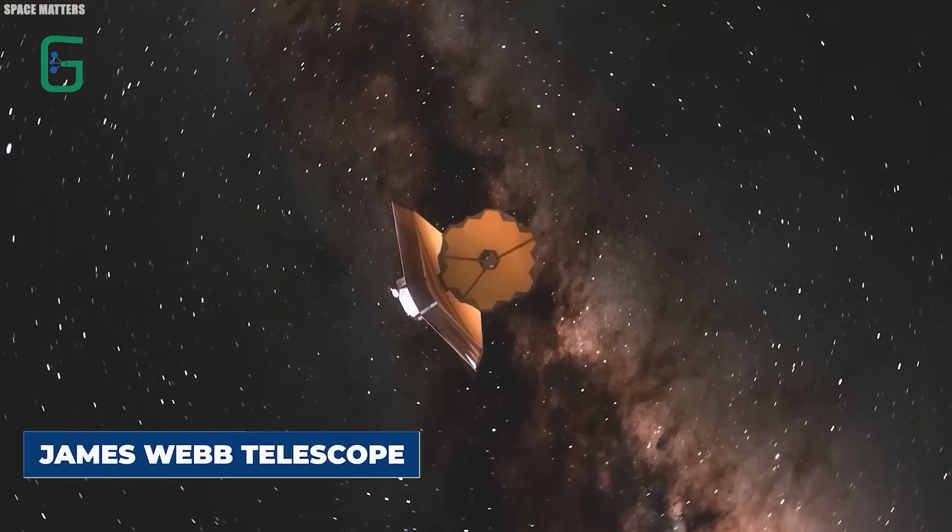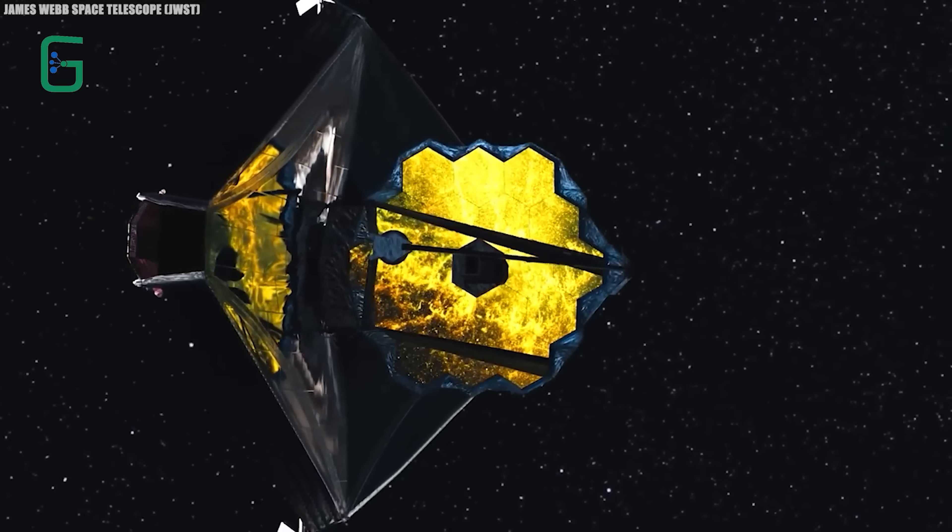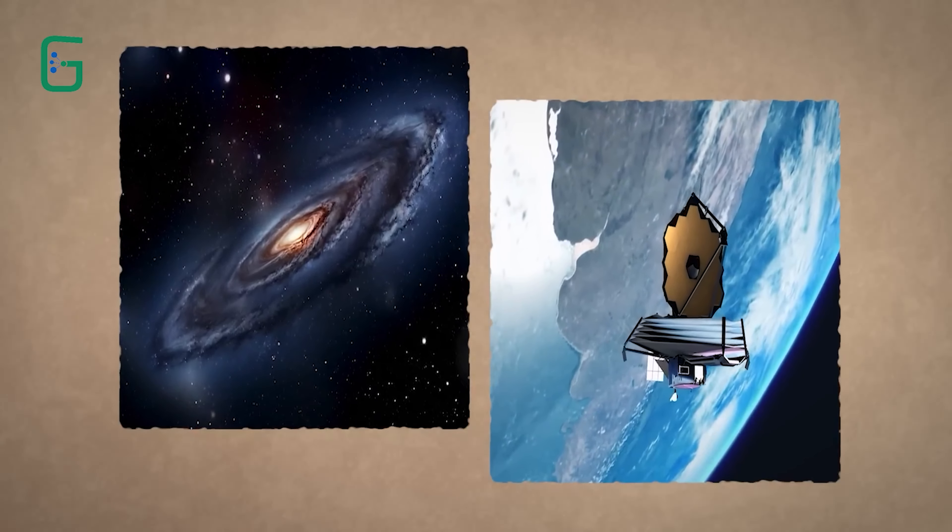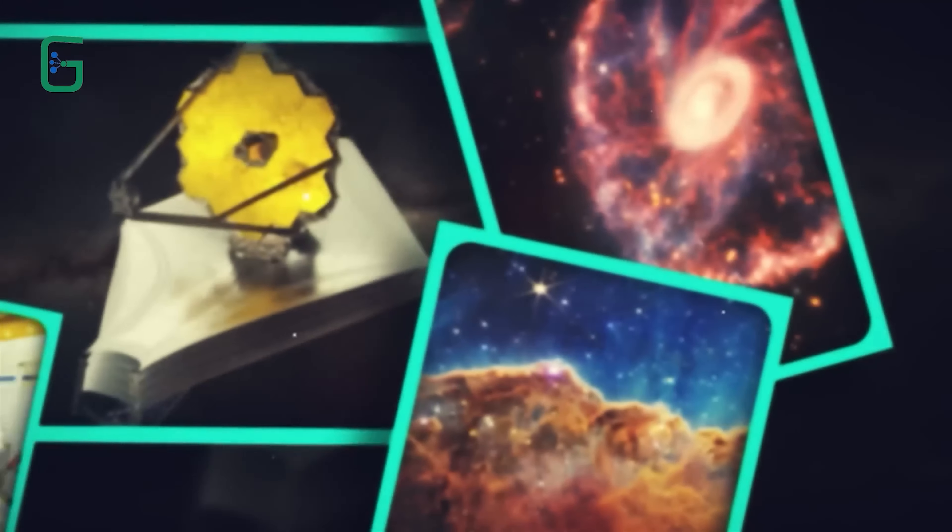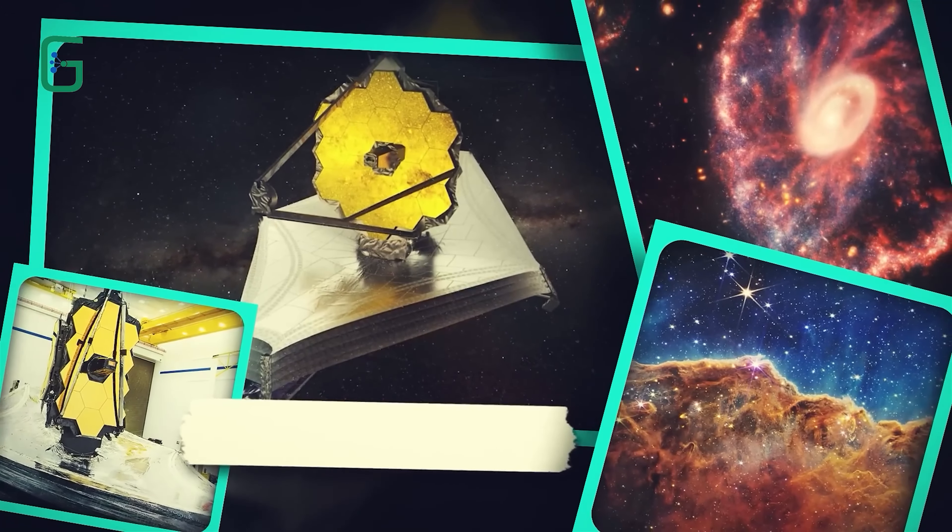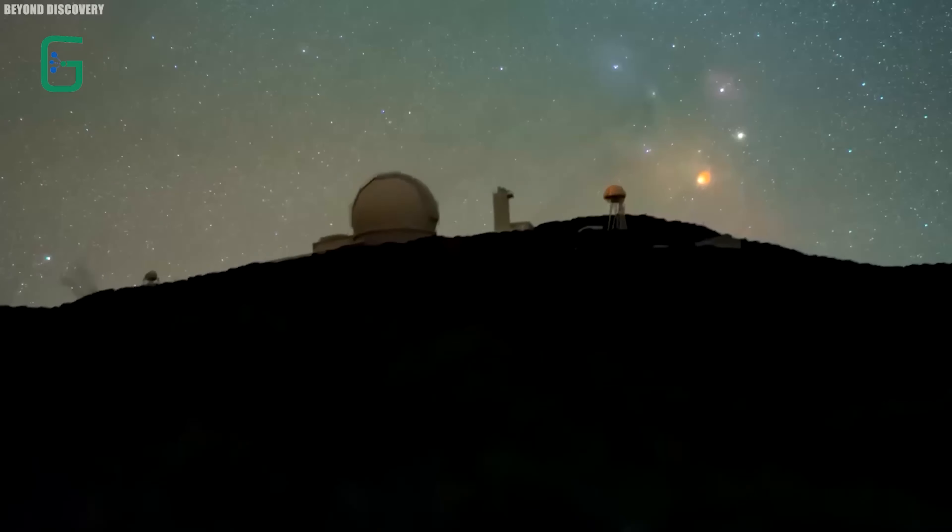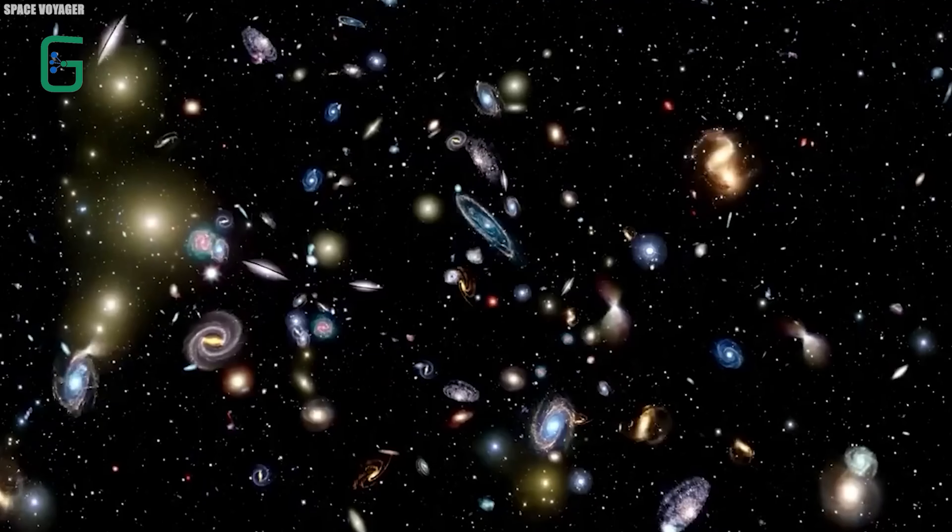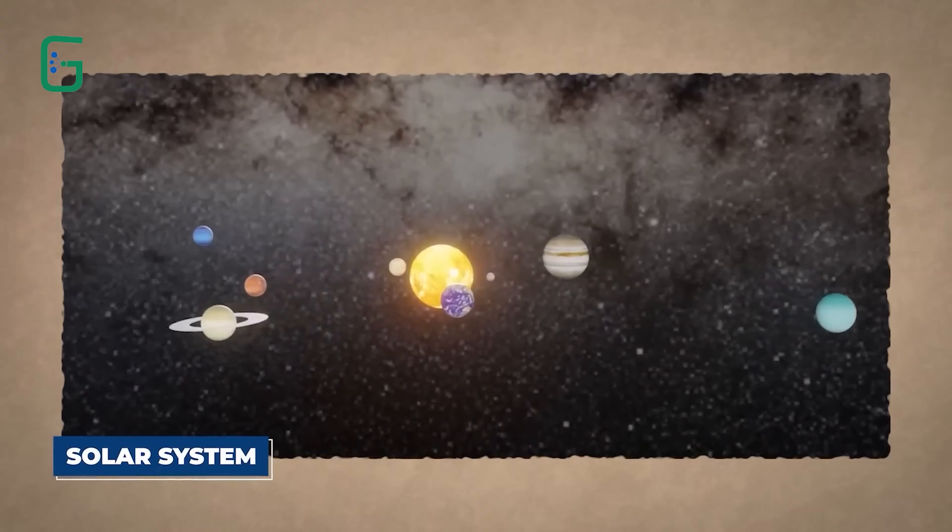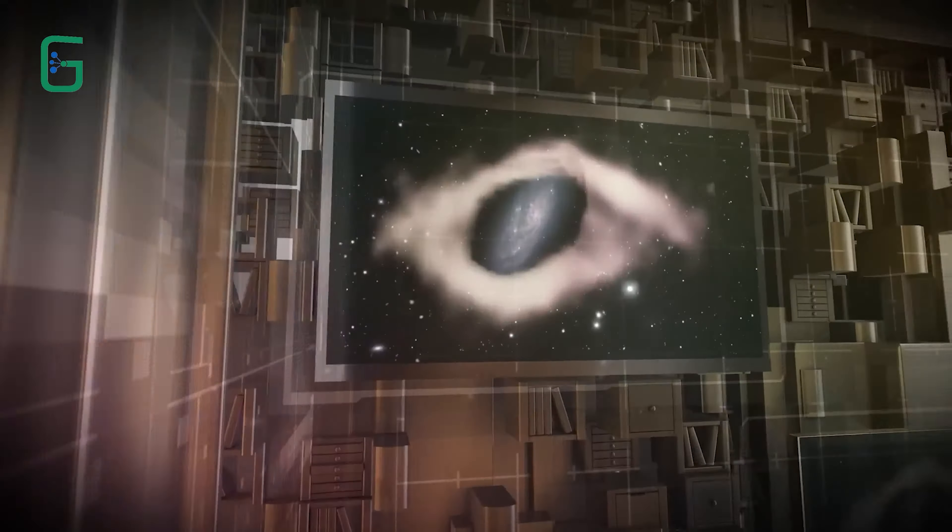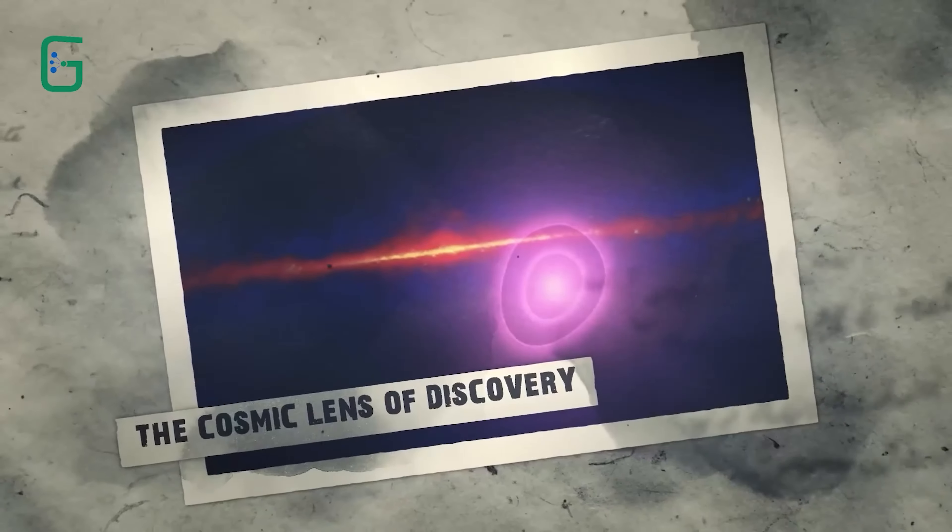In a monumental development, the James Webb Telescope, perched at the forefront of astronomical exploration, has intercepted a signal of unprecedented significance emanating from the distant Andromeda galaxy. This cosmic communication has set the scientific world ablaze with anticipation, sparking a frenzy of speculation and intrigue. Could this be a cosmic anomaly or a sign of intelligent life beyond our solar system? Join us as we uncover how the James Webb Telescope has just received an alarming signal from the Andromeda galaxy.